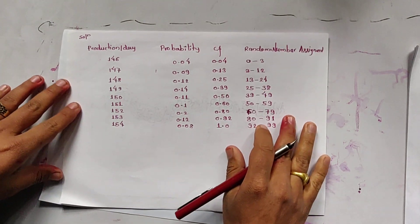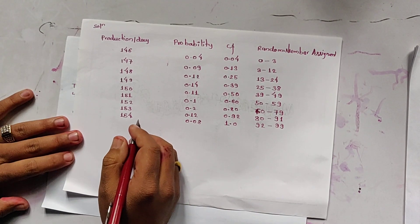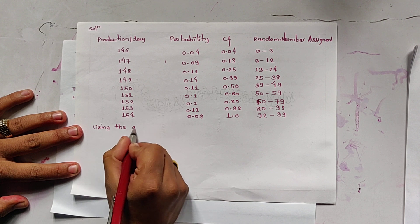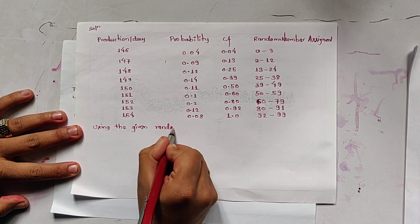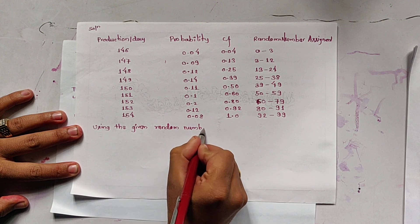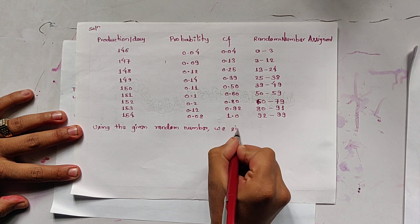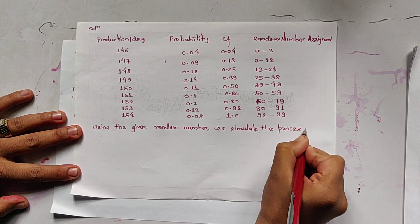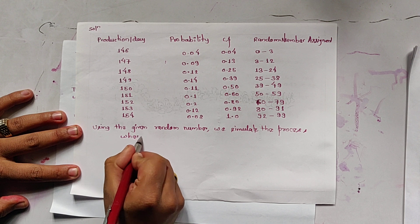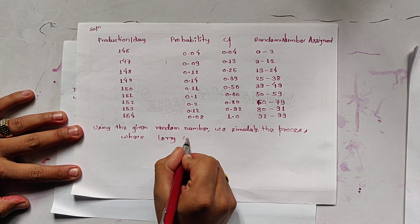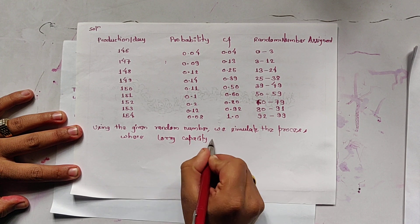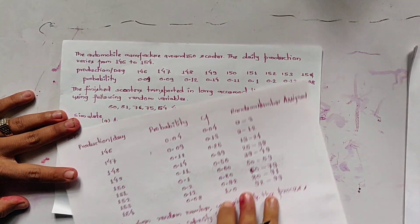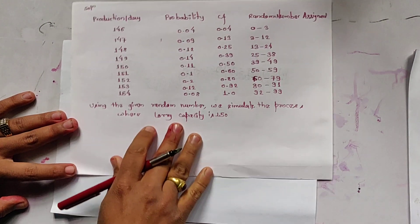Now, using the given random numbers, the process is simulated. The lorry capacity is 150, as given in the question. We construct the simulation table using these random numbers.